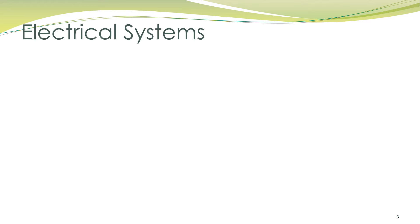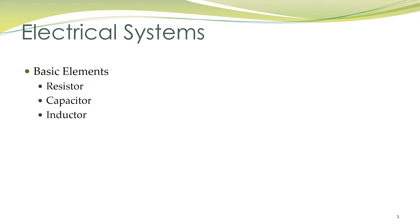Let's first talk about electrical systems. Three basic elements in electrical networks are resistor, capacitor, and inductor. The tools utilized to obtain a mathematical model for electrical networks are Kirchhoff's voltage law and Kirchhoff's current law, i.e. KVL and KCL. You have taken at least two courses on circuit analysis, so we shall not spend too much time on this topic. We shall quickly go through two examples of electrical systems and describe their mathematical models.